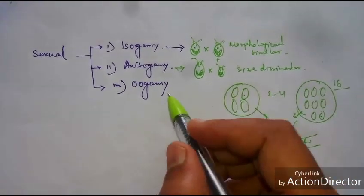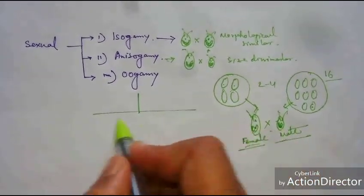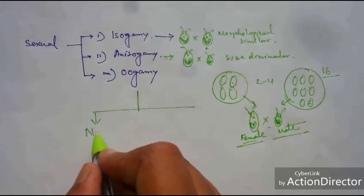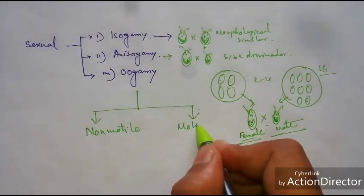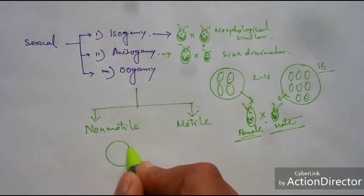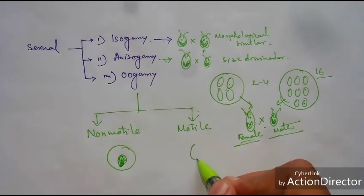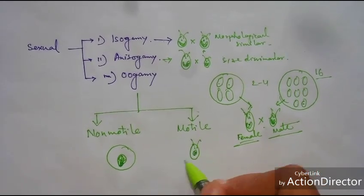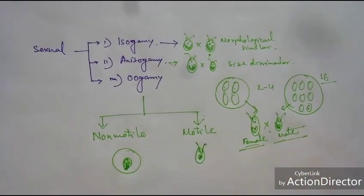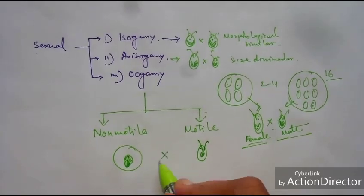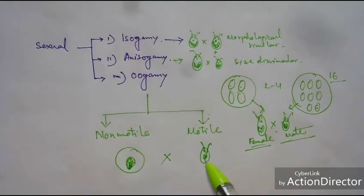In Oogamous type, one is non-motile cell and another is motile cell. The non-motile cell is larger in size with a nucleus, and the motile cell looks like Chlamydomonas cells. When they fuse together, this is called Oogamy.